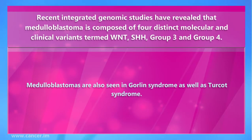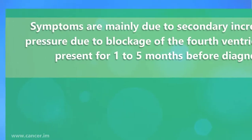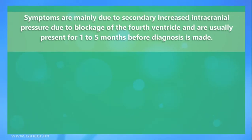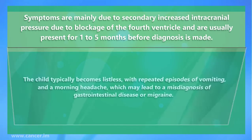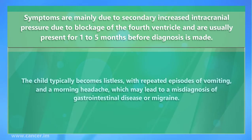Medulloblastomas are also seen in Gorlin syndrome as well as Turcot's syndrome. Symptoms are mainly due to secondarily increased intracranial pressure due to blockage of the fourth ventricle, and are usually present for one to five months before diagnosis is made. The child typically becomes listless with repeated episodes of vomiting and morning headache, which may lead to a misdiagnosis of gastrointestinal disease or migraine.